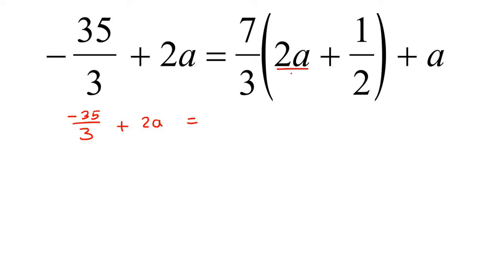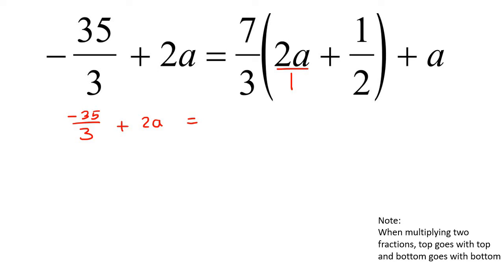This 2a is 2a over 1, because if there's nothing there, then it's over 1. When you multiply the 7 over 3 into that, the top goes with the top and the bottom goes with the bottom. So when multiplying two fractions: top goes with top and bottom goes with bottom. We're going to multiply the 7 and the 2a — the two tops — so that becomes 14a, and then multiply the two bottoms, which is 3 times 1, which is just 3.